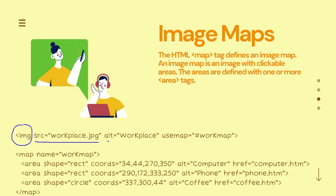After that, the alt attribute provides alternate text with image-related information. And here, as you want to create an image map, you have to use another attribute — that is useMap. If you want to create an image map with the help of that image, you have to use the useMap attribute. In the useMap attribute, with a hash symbol, you have to specify a name, which will be recognized as the map name.